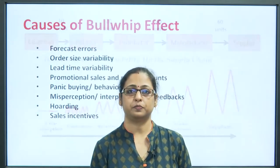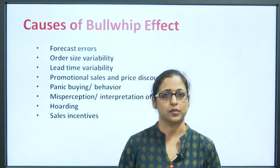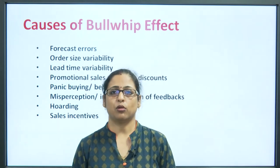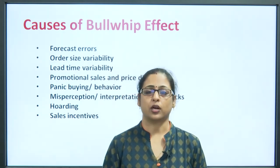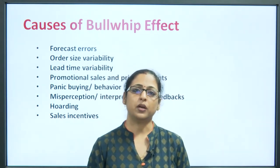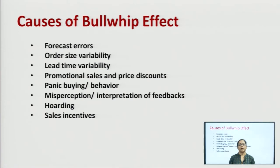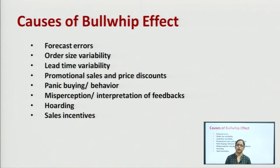Now let us understand what the reasons for the bullwhip effect are. The first reason is forecast error. If a company is not able to forecast demand properly, that may lead to inflated demand forecasting and may result in overproduction or ordering of buffer stock at each level. Forecasting error can therefore lead to an increase in orders.